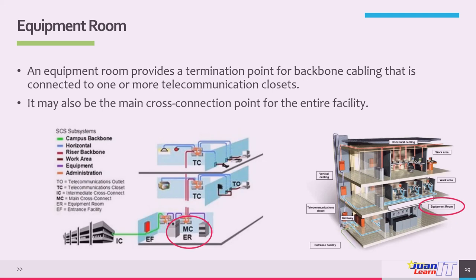The equipment room contains the main distribution frame, the main location for backbone cabling, phone systems, power protection, uninterruptible power supply (UPS), LAN equipment such as bridges, routers, core switches, hubs, and firewalls, as well as file servers and data processing equipment including mechanical terminations. The server farm is also located in the equipment room.